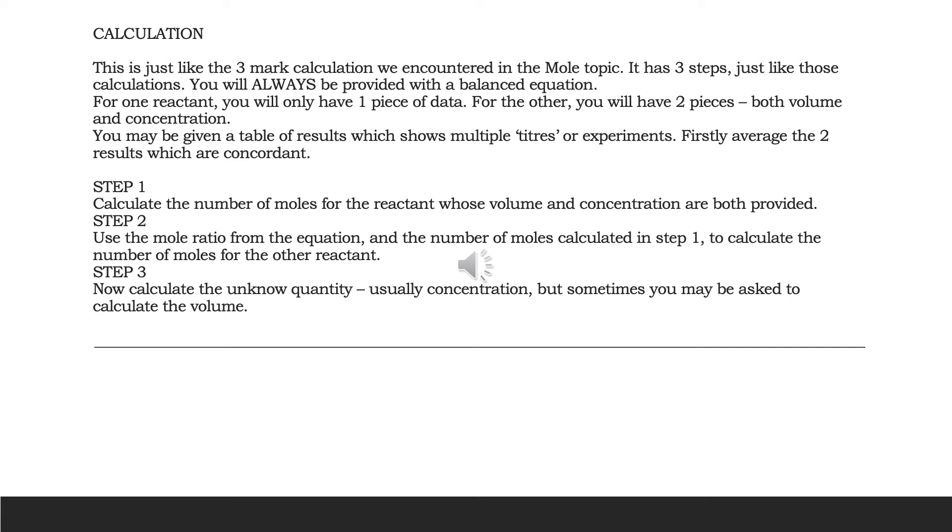We're now on to the final step. What you're now going to do is to calculate the unknown quantity. Now this is usually concentration but sometimes it might be volume. So you're going to have to rearrange your N equals C times V calculation to either give you C equals N over V or V equals N over C.